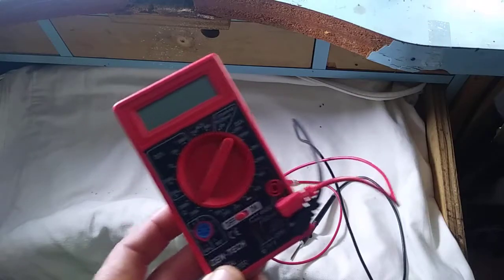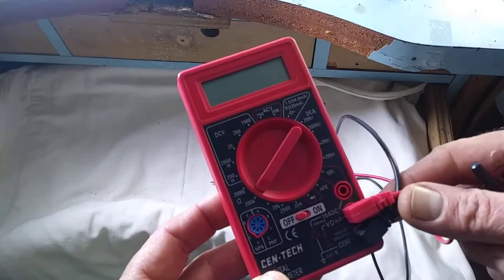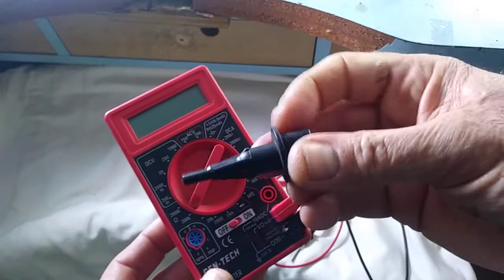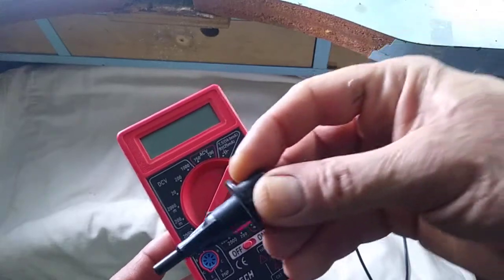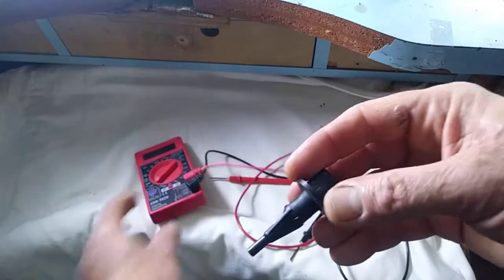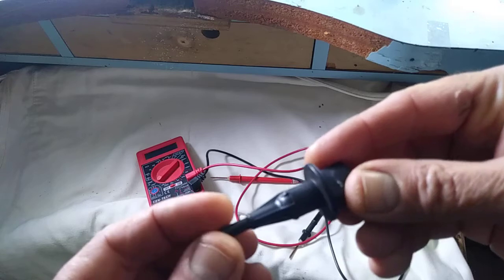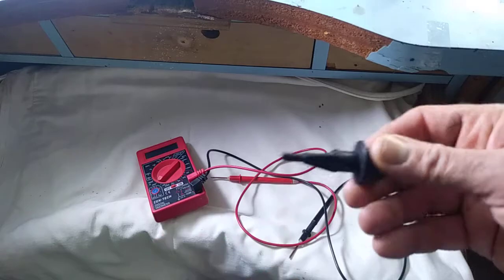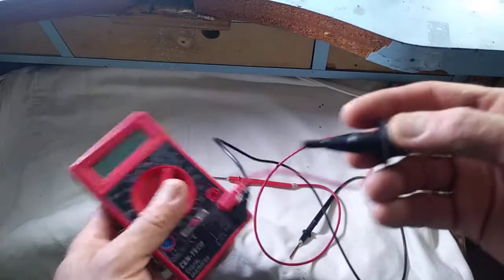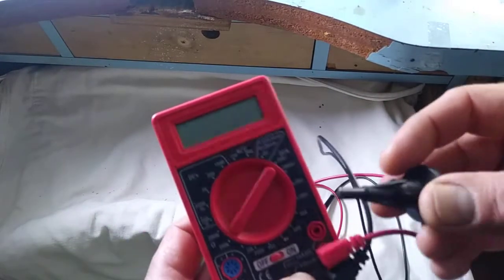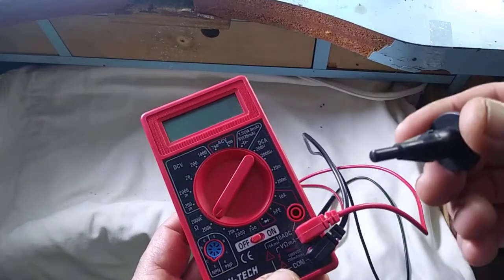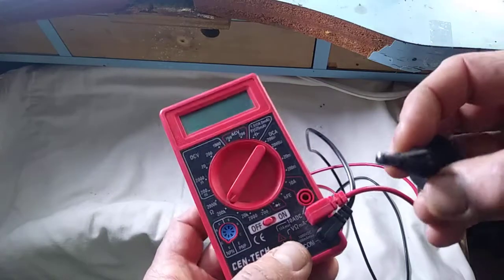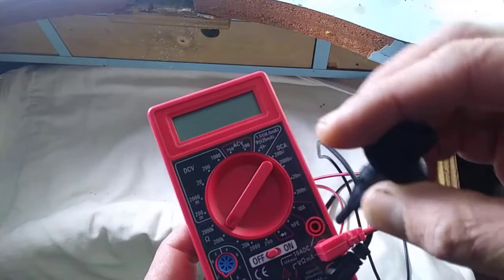The intake air temperature sensor detects the intake air temperature and transmits the signal to the ECM. The temperature sensing unit uses a thermistor which is sensitive to change in temperature. The electrical resistance of the thermistor decreases in response to temperature rise.